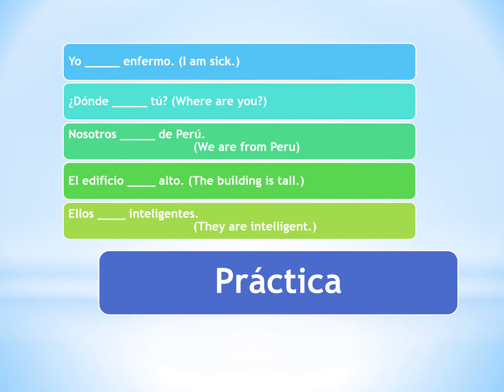Let's try a practice activity. I've given you the Spanish sentence but taken out ser or estar, so figure out which one you need and how to conjugate it — the English translation is provided. Number one: I am sick. Number two: Where are you from? Number three: We are from Peru. Number four: The building is tall. Number five: They are intelligent. Pause the video and figure out ser or estar and how to conjugate it — I'll give you the answers on the next slide.